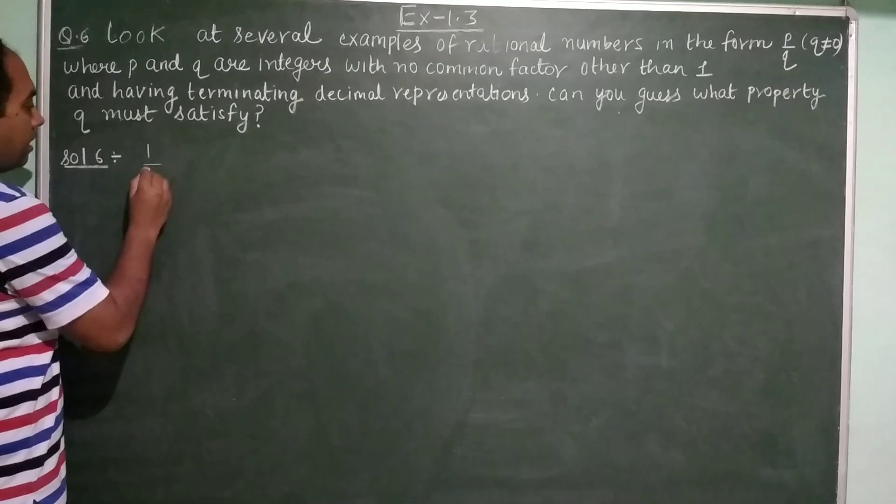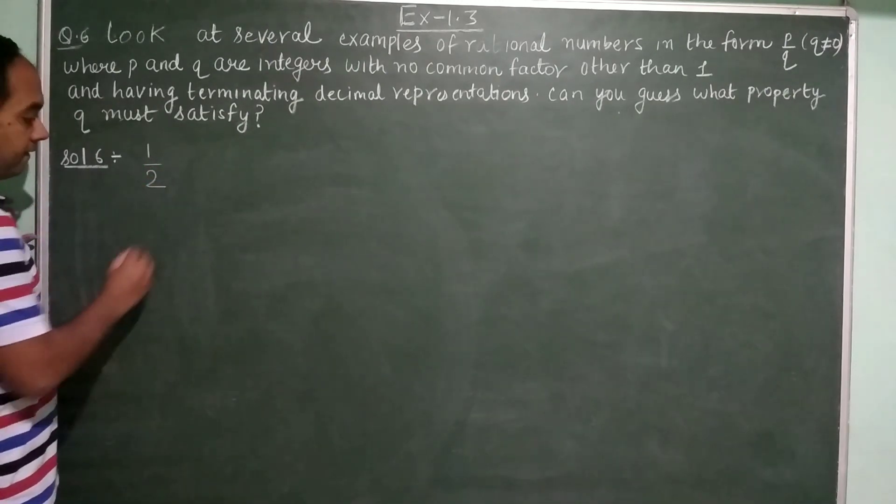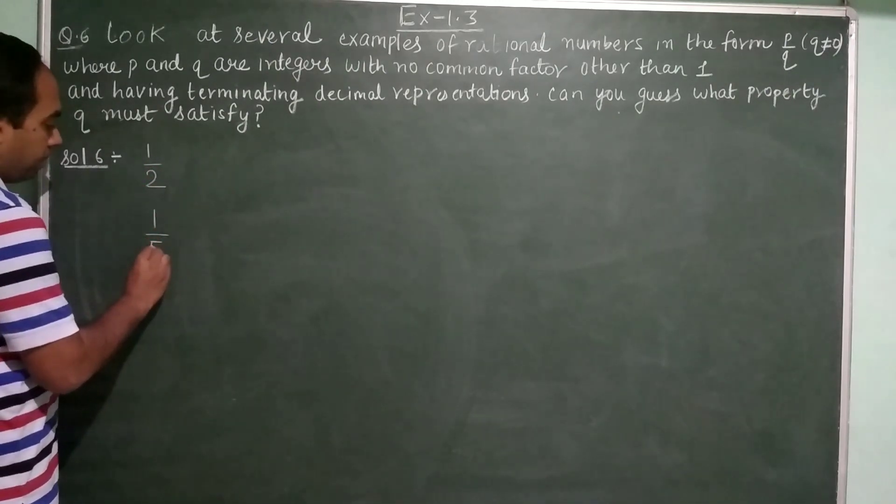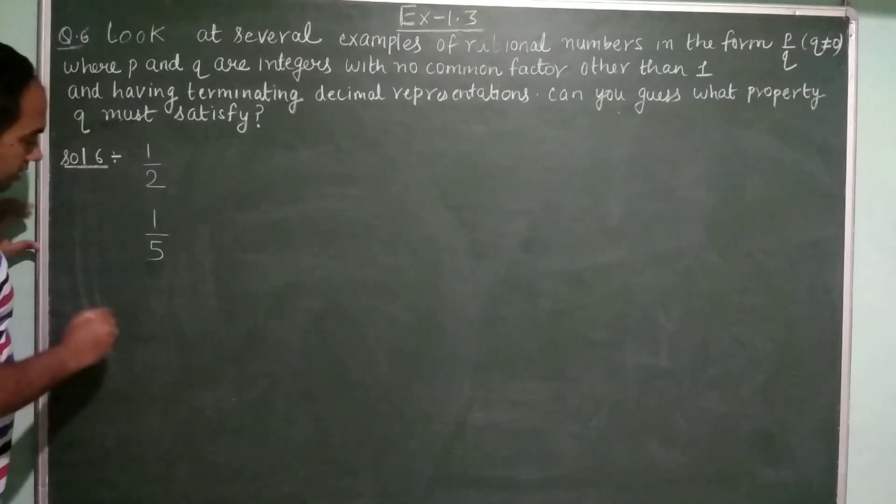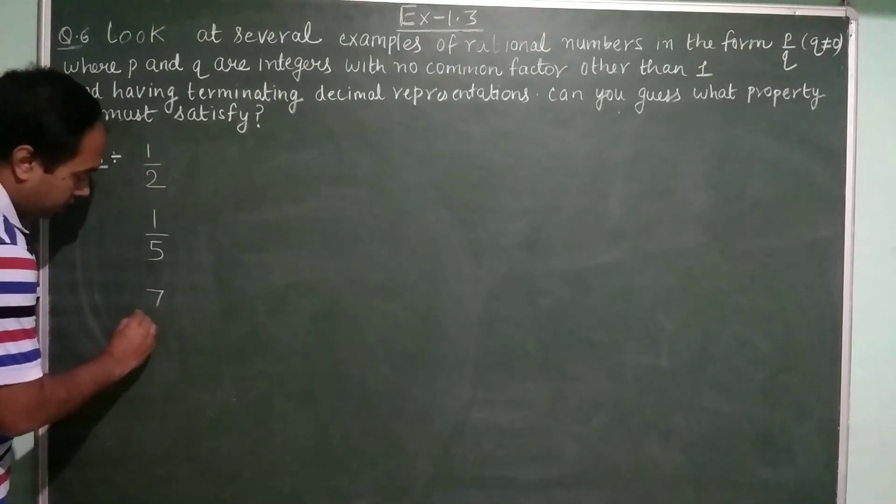So first I am writing the examples. Suppose the first example is 1 upon 2, one more example is 1 upon 5, and one more example is 7 upon 20.